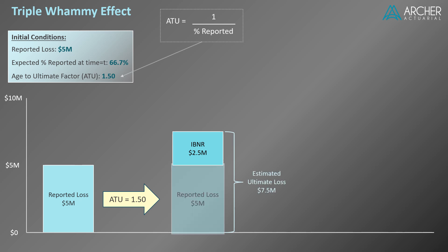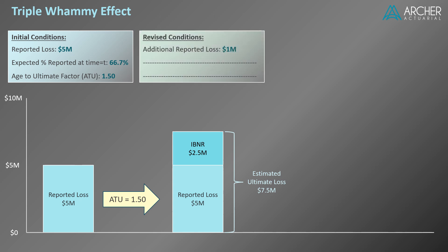Using the reported loss development method to calculate an indication of ultimate loss: multiplying our $5 million of reported loss by the age-to-ultimate factor of 1.50 yields an estimate of ultimate loss of $7.5 million, of which $5 million is our original reported loss and the remaining $2.5 million is IBNR, also known as unreported loss. So far, so good — no triple whammy yet. Let's revise our initial conditions to include an additional $1 million of reported loss at time t. Suppose this amount was accidentally omitted from the claims data, and now that it has been discovered, we want to see how it will impact our estimates of ultimate loss.